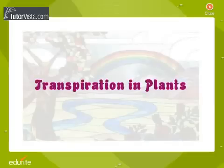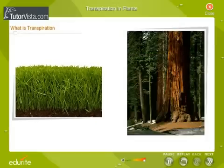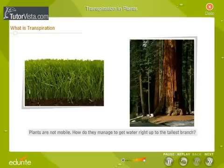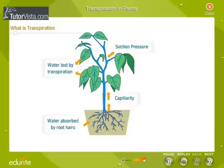Transpiration in Plants. All plants, from the smallest weed to the tallest tree, need water. Plants are not mobile, so how do they manage to get water right up to the tallest branch? The roots absorb water and mineral salts from the soil through root hairs by the process of osmosis. Only a small percentage of this water is used by the plant; the rest gets evaporated from the surface of leaves. This evaporation of water from the plant is called transpiration.